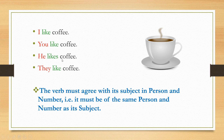The verb must agree with the subject in person — that is, it must be of the same person as the subject. Now look at these sentences: 'He likes coffee' and 'they like coffee.' The subjects 'he' and 'they' are in the same person, that is third. But the first is singular and the second plural in number. The verb 'like' has two different forms in the third person: 'likes' with 'he' (singular) and 'like' with 'they' (plural). So we can say the verb must agree with its subject in number.